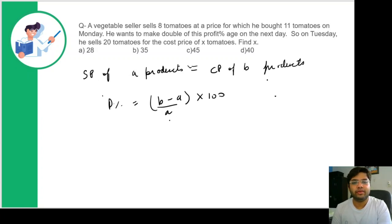Let's use this formula in the question and see how quickly we can solve this. The vegetable seller sells 8 tomatoes at the price of 11 tomatoes. So SP of 8 tomatoes equals CP of 11 tomatoes. Profit percentage equals (11 minus 8) upon 8 into 100, which is 3 by 8 into 100.